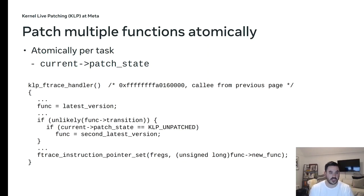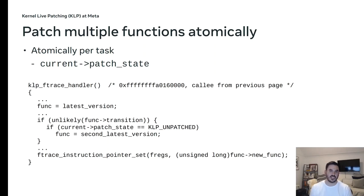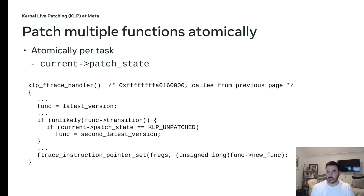Live patch can also patch multiple functions atomically per task. Each task has a state showing whether it has been patched for a given live patch instance. The live patch subsystem guarantees the patch is applied atomically — you won't have one task calling the patched function while another uses the unpatched function, which could be unsafe if you're changing how locks are required. The subsystem iterates over every task, walks its call stack to detect if it's safe to transition, and if it fails, rolls everything back and guarantees the state from before the patch was applied.